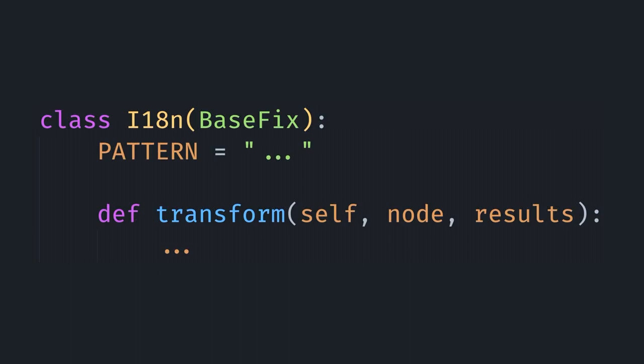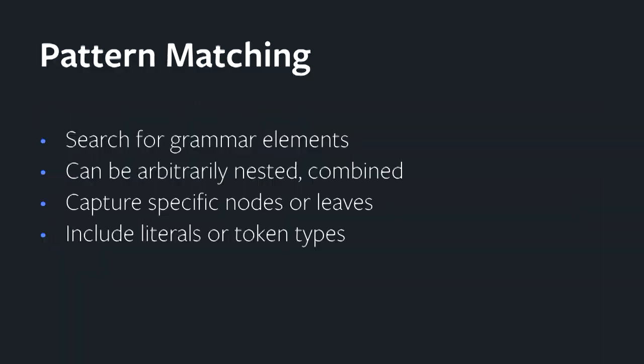An individual fixer would look like this in code: you have the pattern string, which I'll get to in a moment, and then the transform method. The way pattern matching works is it's a string based off of the actual grammar elements we want to look for. You can provide arbitrary nesting or alternatives if you want to look for any cases of multiple different types of elements, and you can capture subtree elements within that pattern. Your pattern could also include string literals or individual tokens that you want to match rather than just the grammar rules.